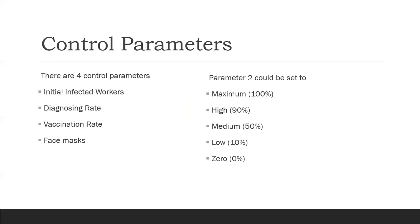The second control parameter is the diagnosing rate. The diagnosing rate means the rate of identifying an infected worker inside the factory. You have the ability of setting it to maximum which is 100%, high which is 90%, medium which would be 50%, low would be 10%, and 0 is the last percentage. These percentages will be used in further calculations of this model.